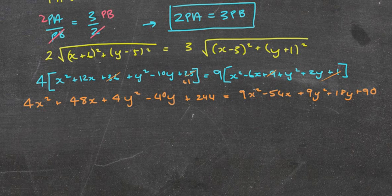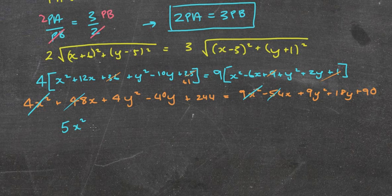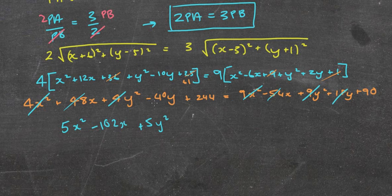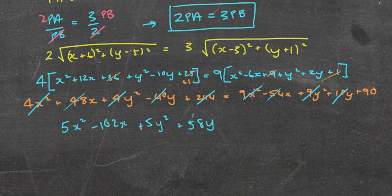Moving everything to the right: 9x² - 4x² = 5x², -54x - 48x = -102x, 9y² - 4y² = 5y², 18y + 40y = 58y, and 90 - 244 = -154. So the equation of the locus is: 5x² - 102x + 5y² + 58y - 154 = 0.